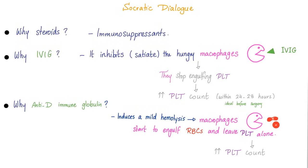Using the Socratic dialogue for ITP treatment: why give steroids? Because they are immunosuppressants, and ITP is an autoimmune disease. Why give IVIG? Because IVIG saturates the hungry splenic macrophages — you shove IVIG into their mouths so they stop engulfing platelets, causing platelet count to increase within 24 to 48 hours, which makes it ideal before surgery. Why anti-D immune globulins? They induce a mild hemolysis — destroying red blood cells gets the splenic macrophages busy removing RBC debris, so they leave the platelets alone and platelet count rises.